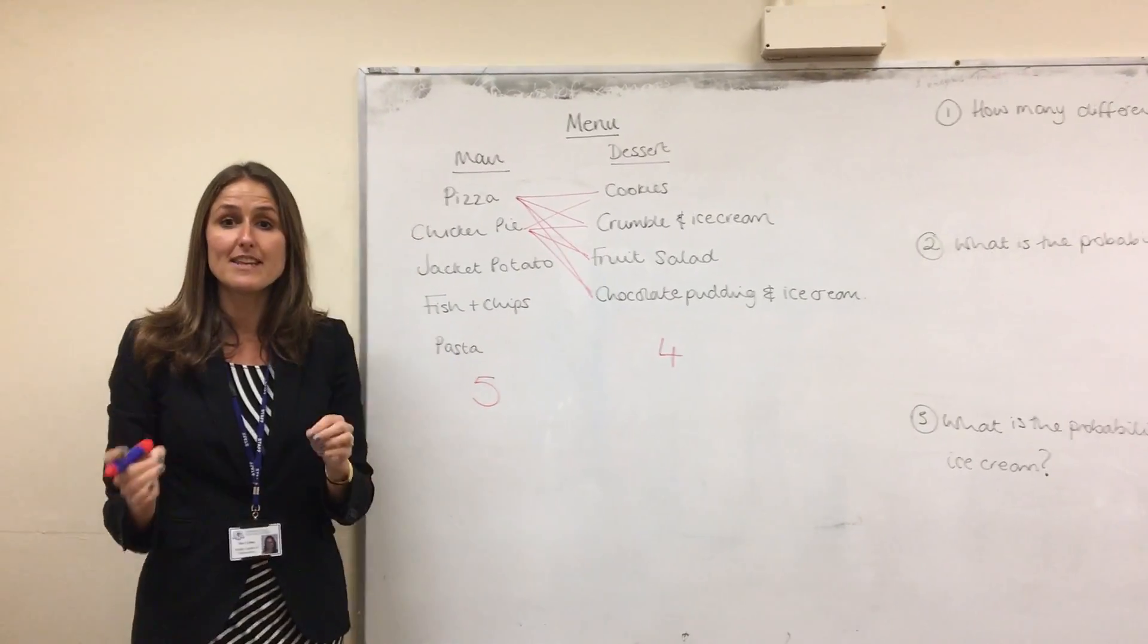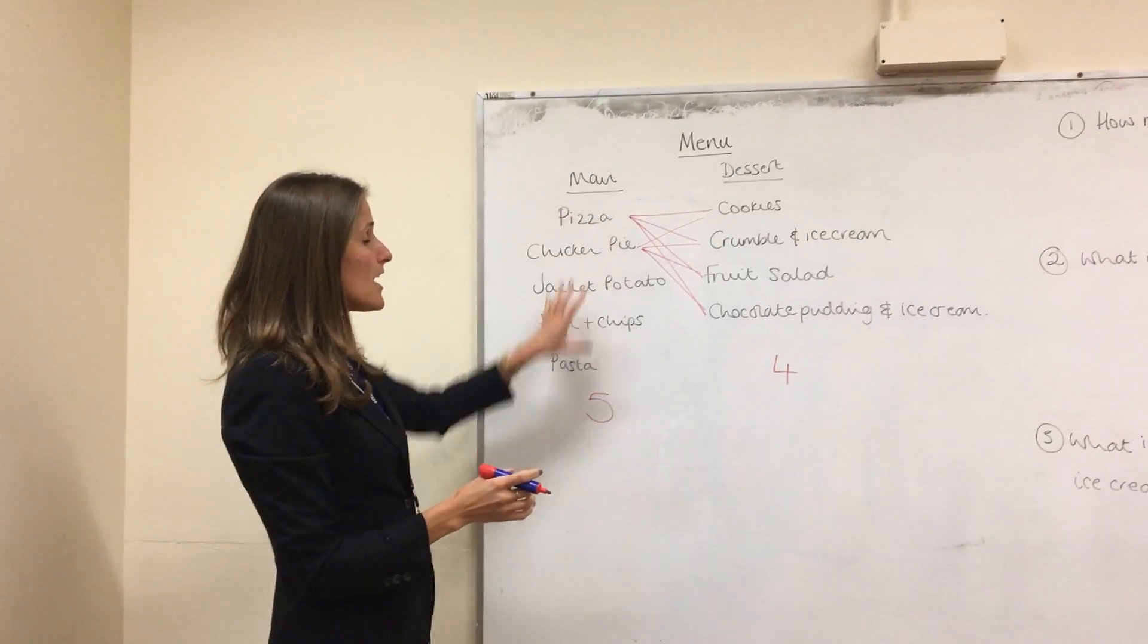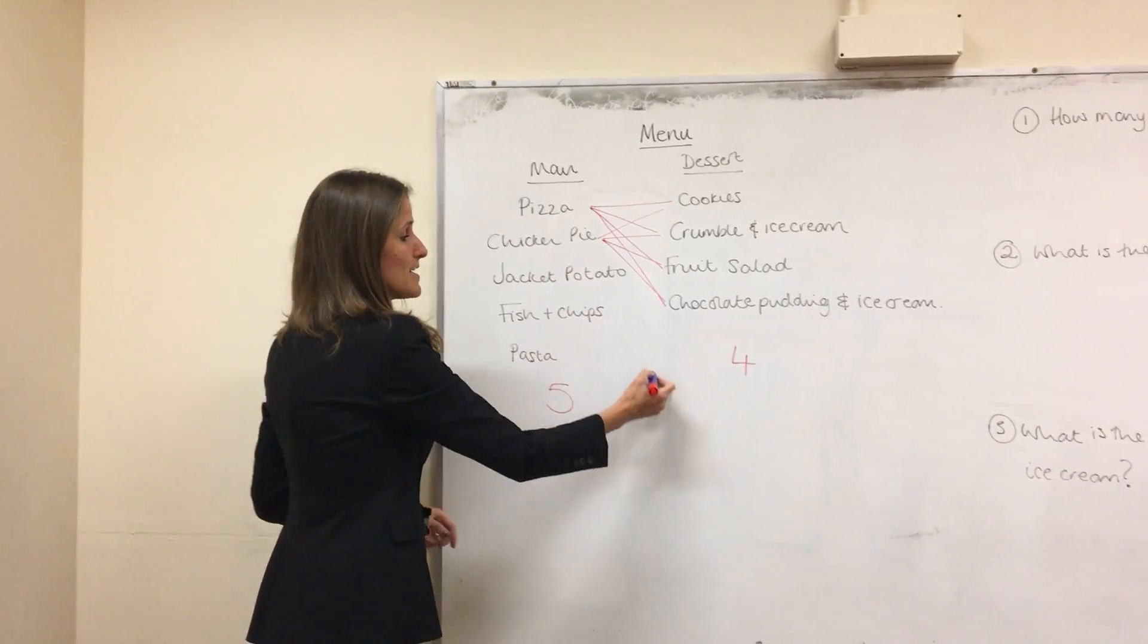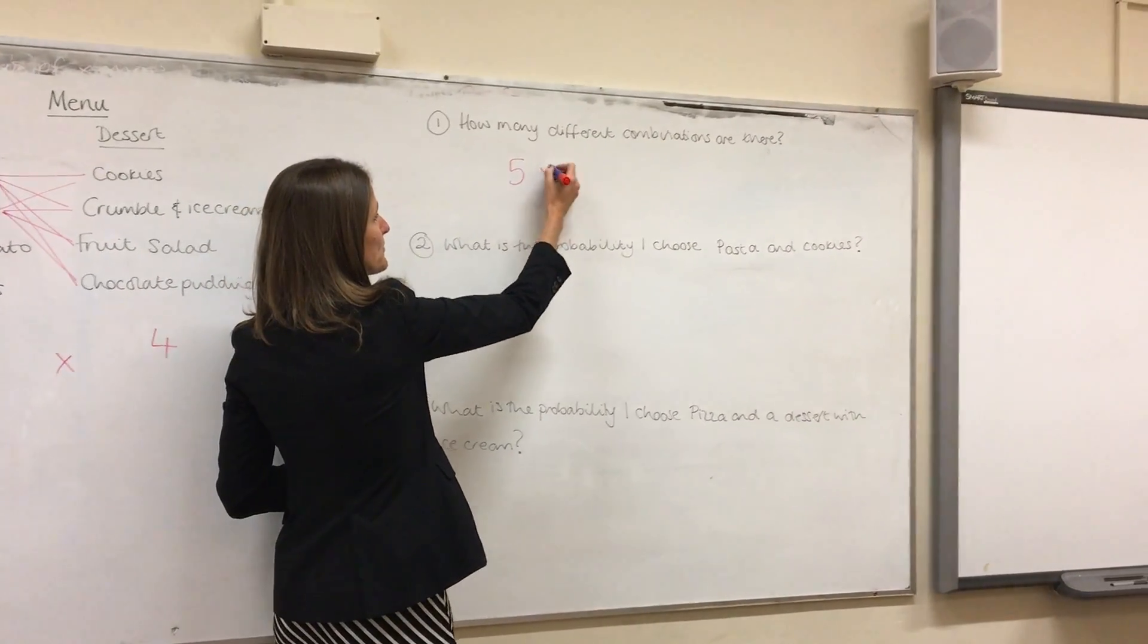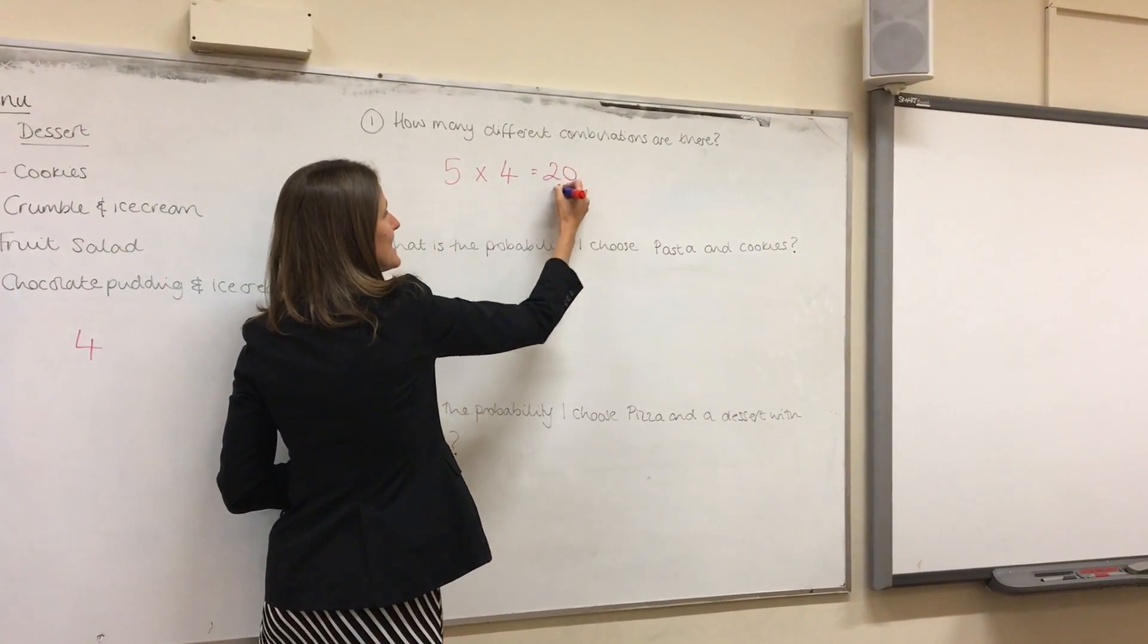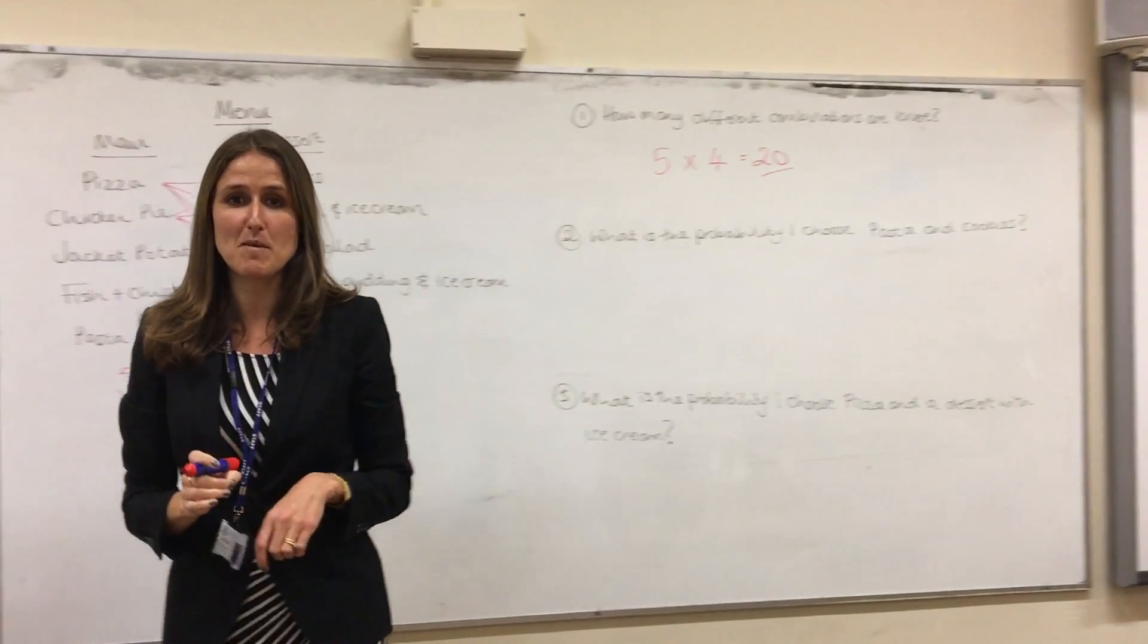So to actually find the number of combinations in total, what you do is you times the number in this column by the number in this column, and that gives us five times four which is twenty. Twenty different options for my menu.